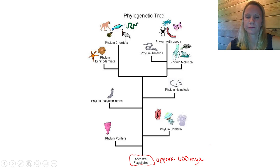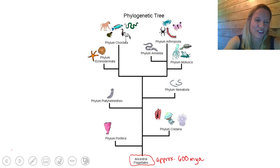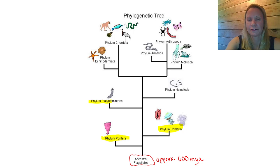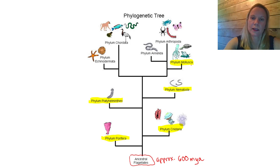Let me introduce you to our family tree within the kingdom animalia - the nine different phyla. From the ancestral flagellate, we have the phylum Porifera, which includes sponges. The phylum Cnidaria, which includes jellyfish. Phylum Platyhelminthes - flatworms. Phylum Nematoda - roundworms. Here we see a branching event. To the right, we see phylum Mollusca - things like clams, snails, octopuses, and slugs.